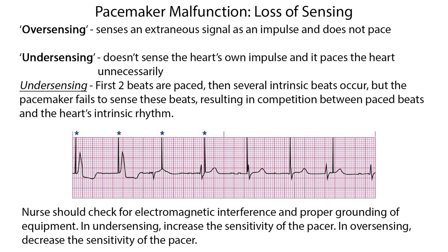In loss of sensing, the pacemaker is either over-sensing, where it senses an external signal as an impulse and does not pace, or it is under-sensing the heart's own impulse and paces the heart unnecessarily. In the example of under-sensing, the first two beats are paced, then several intrinsic beats occur, but the pacemaker fails to sense these beats, resulting in competition between paced beats and the heart's intrinsic rhythm. The nurse should check for electromagnetic interference and proper grounding of the equipment. In under-sensing, increase the sensitivity of the pacer; in over-sensing, decrease the sensitivity of the pacer.